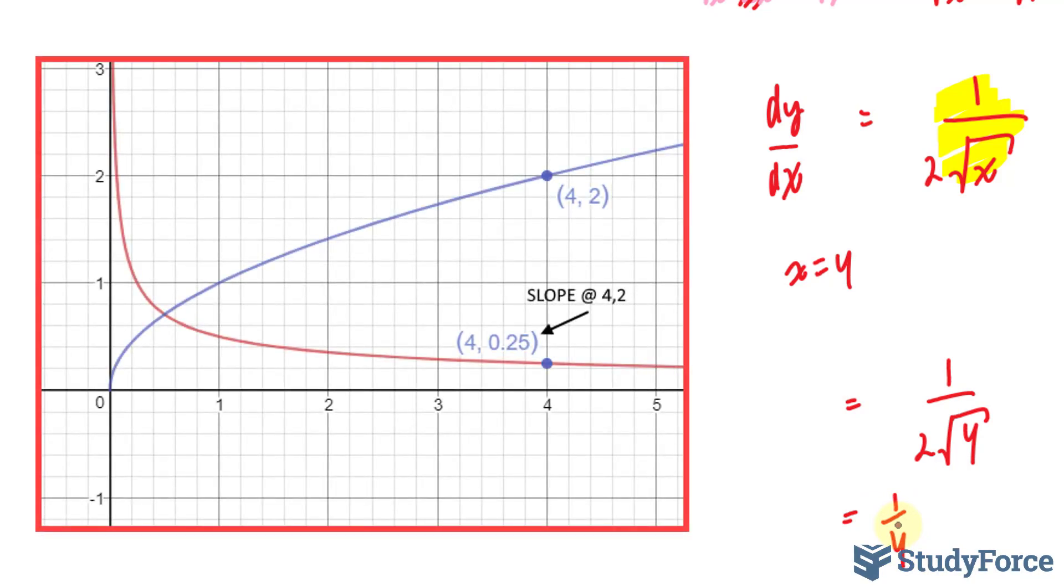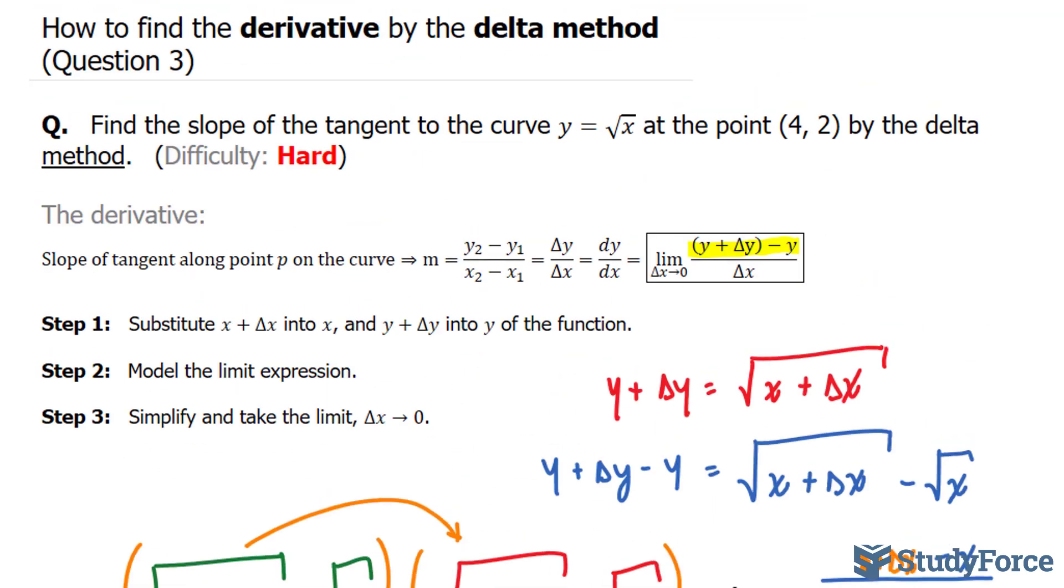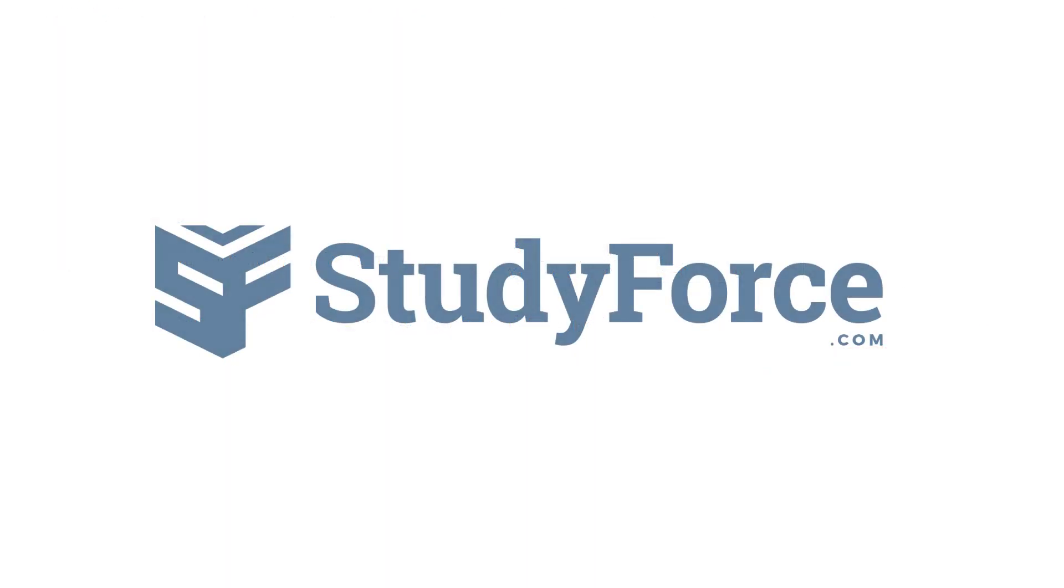I've provided a visual on the screen right now just to give you an idea of the difference between the original function and the derivative. And there you have it. That is how to find the derivative by the delta method. Thank you.